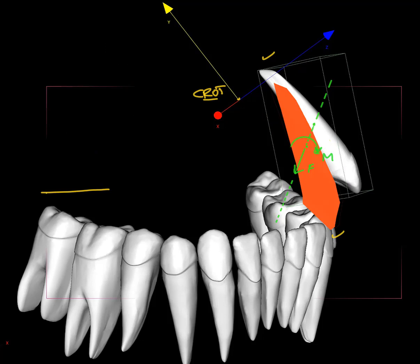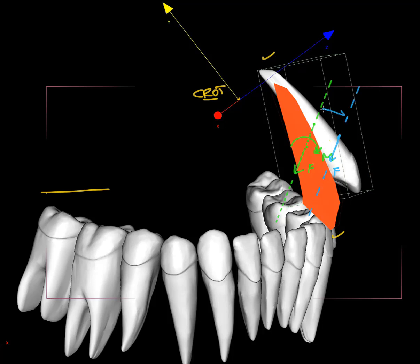So how can we translate this moment-to-force ratio of 6 into a biomechanical concept that makes some sense? One way is to take force F with a line of action in blue right here, that is 6 mm away from the other line in parallel. So the blue force F being 6 mm away from the center resistance gives us this system with a moment-to-force ratio equal to 6.